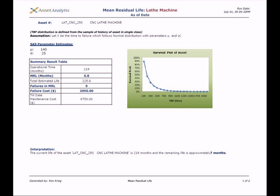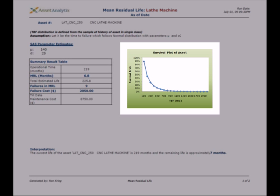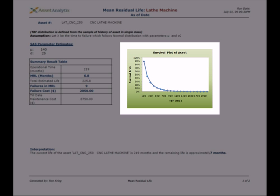Similarly, mean residual life can be calculated depending on its failure distribution like the Weibull or the Gompertz distribution. Survival trend plot of our asset can be plotted in this way.